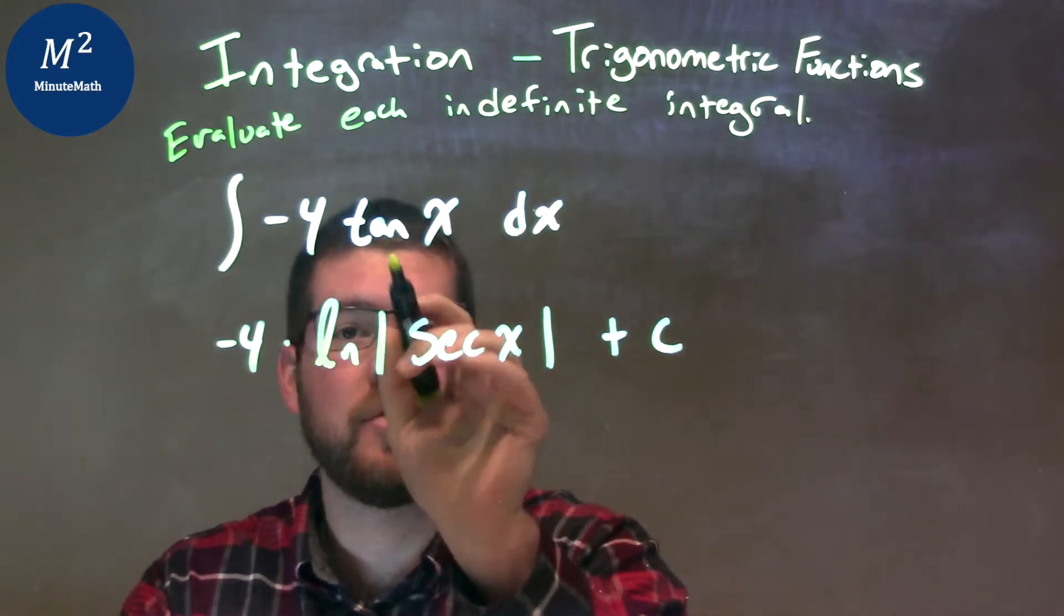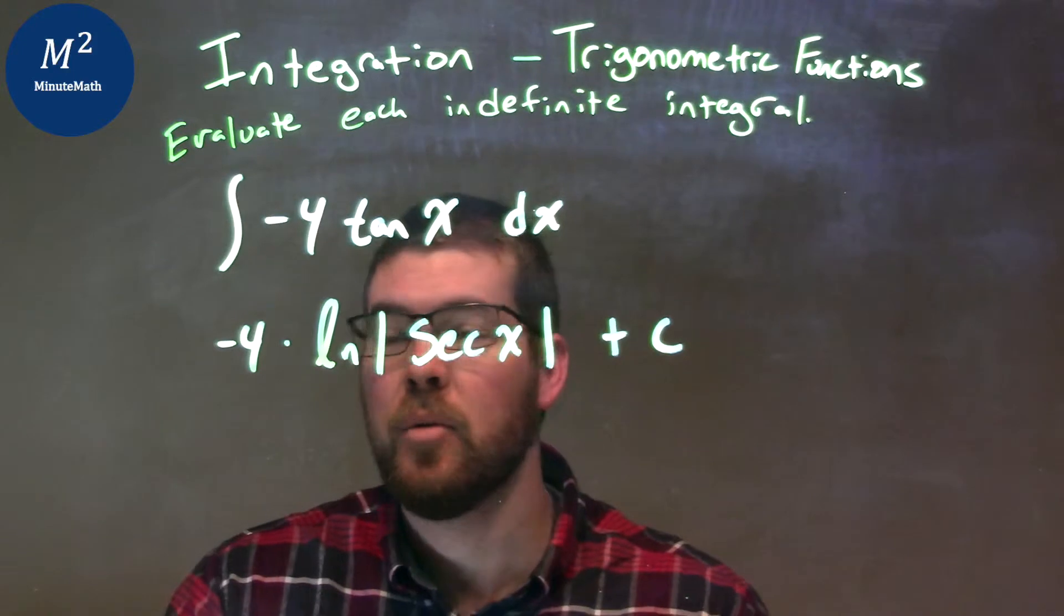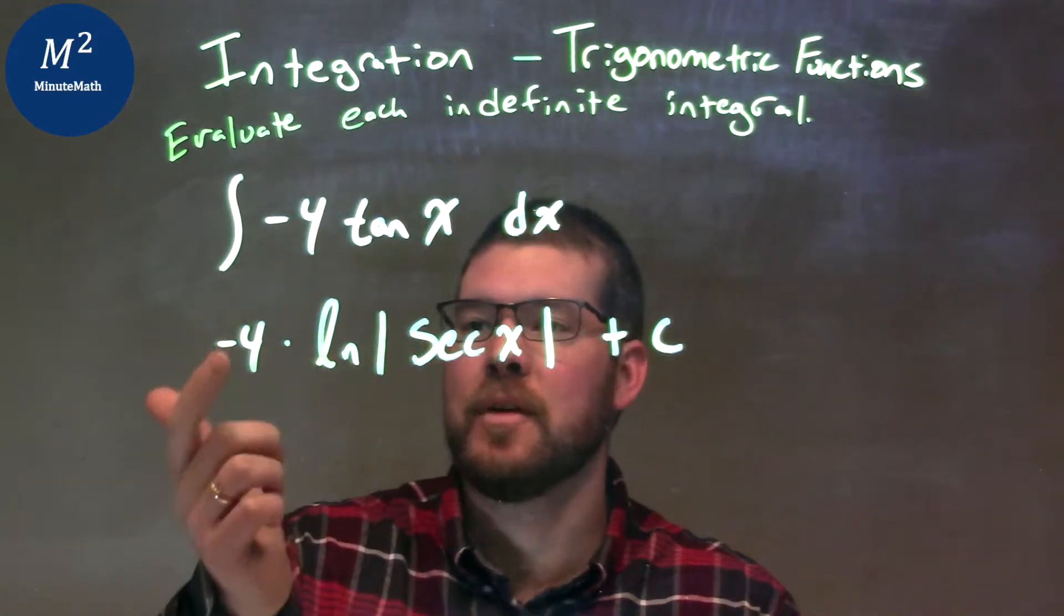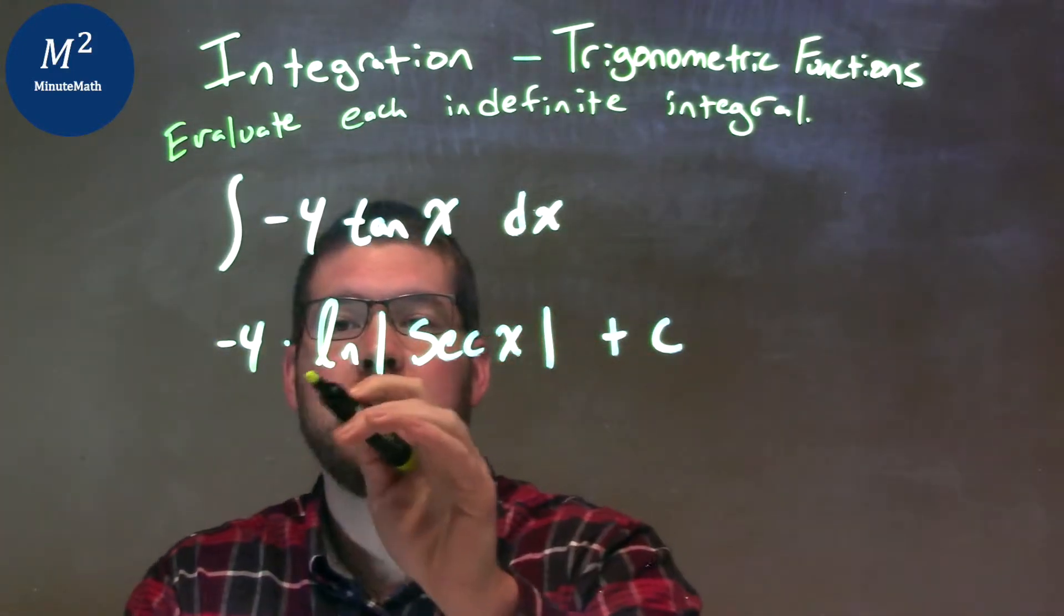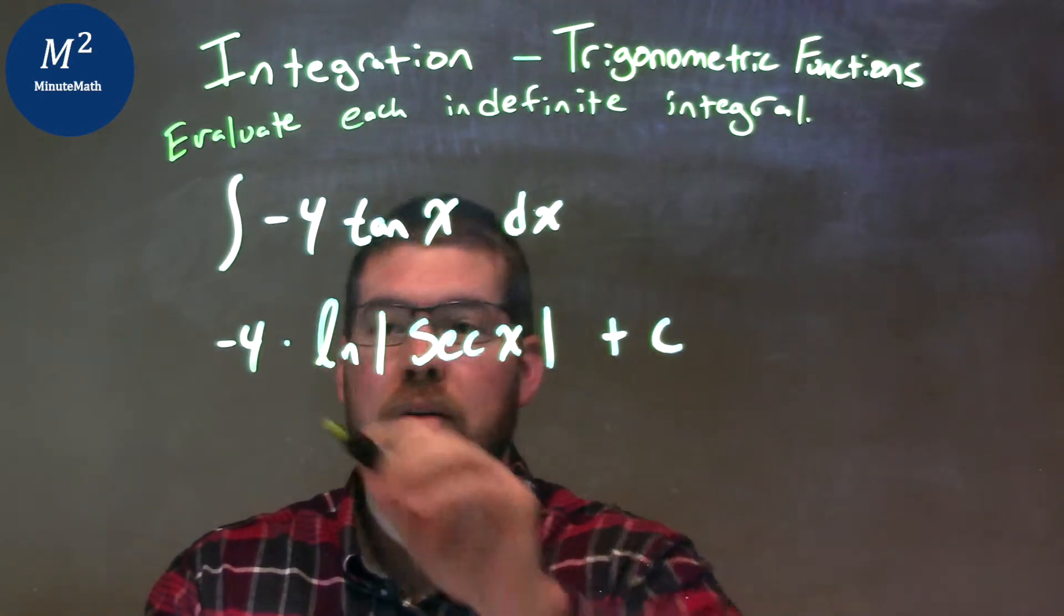So, again, the integral of tangent of x is natural log of the absolute value of the secant of x. Well, we're pretty much done. The constant was out front, negative 4, and so our final answer is negative 4 times the natural log of the absolute value of the secant of x plus c.